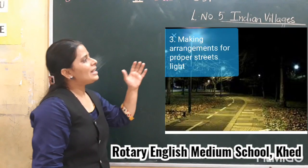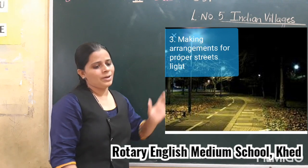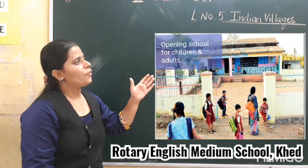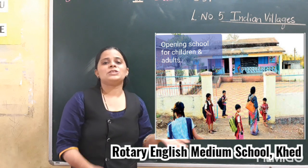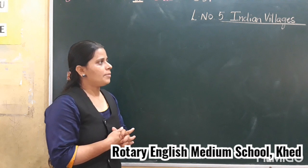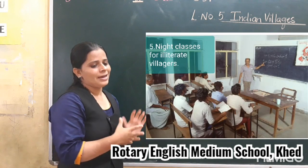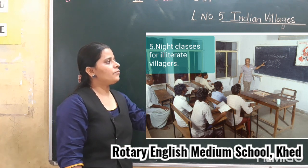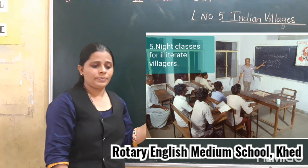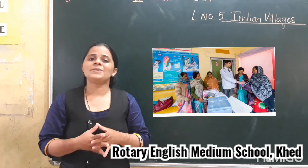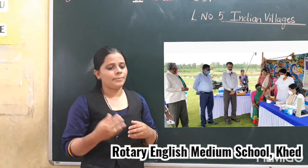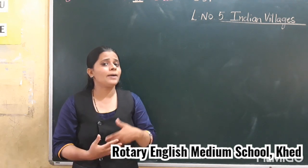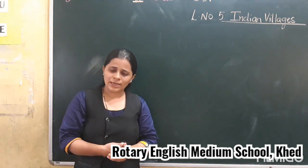Number 3: making arrangement for proper street lighting. Number 4: opening schools for educating children and adults. Number 5: making arrangement for night classes for elderly villagers who work on farms and in factories. Number 6: setting up dispensaries and medical camps for treating the people. Got it, my children?